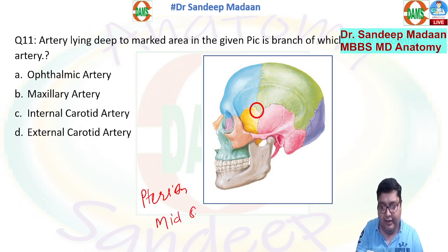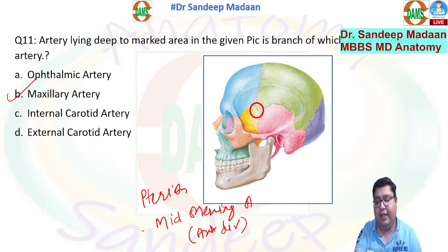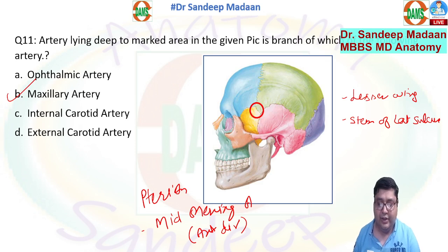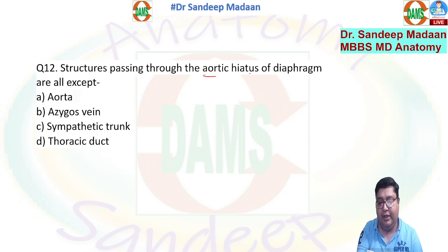The next question — a favorite of examiners — is about the pterion. What lies deep to the pterion? The answer is the middle meningeal artery, specifically its anterior division. The middle meningeal artery is a branch of the maxillary artery. They may also ask which part of the bone lies deep to it — the lesser wing of the sphenoid — or which part of the brain is related — the stem of the lateral sulcus.